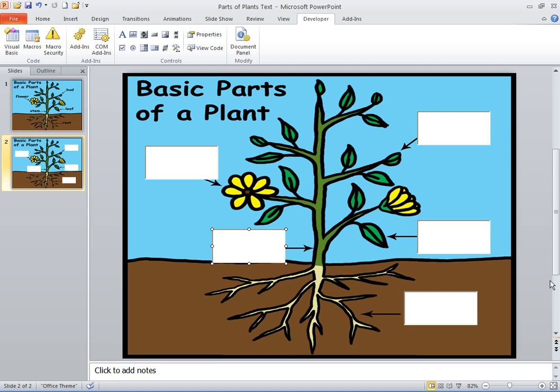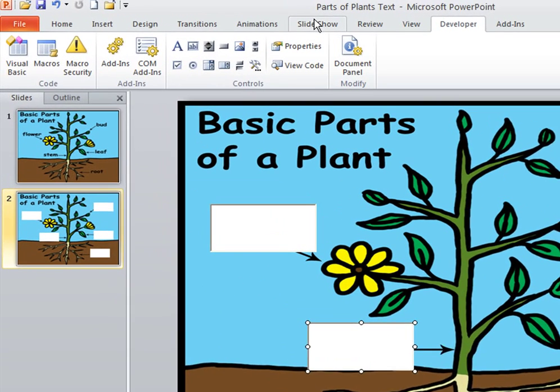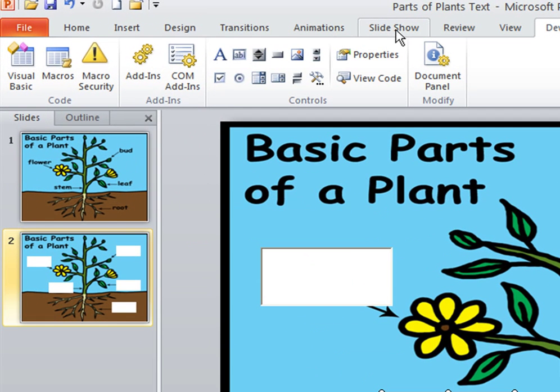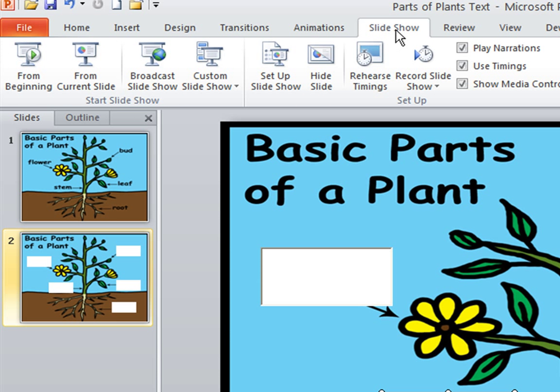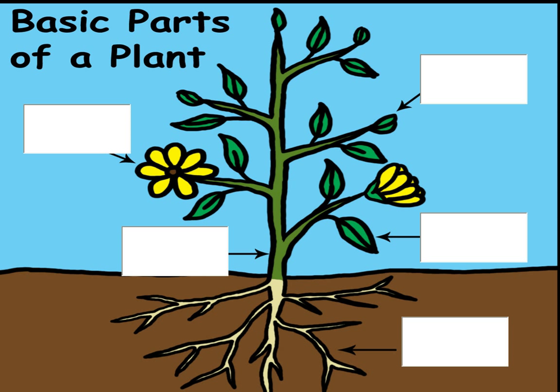Now I'm ready to run the show. Simply go to the top of your ribbon and go to Slideshow from Beginning. Here's the part you'll teach — go over the concepts, go over the vocabulary words with your students, show the picture on the screen, and then go to the quiz slide where the words are now covered up.